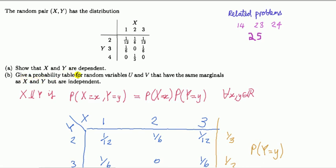Give a probability table for the random variables U,V that have the same marginals as X,Y but are independent. So we've got a joint probability mass function here for the two variables X,Y. This table here contains all probabilistic information about these pairwise outcomes X,Y.